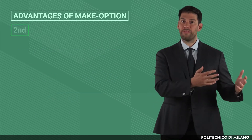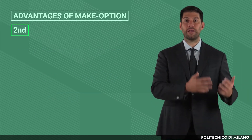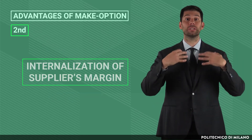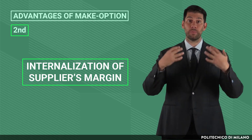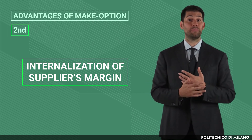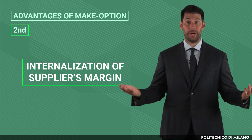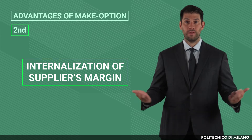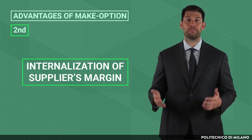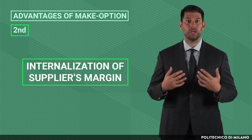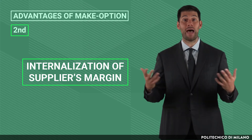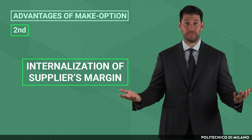A second advantage is that I will internalize the supplier's margin, as I will have to pay no margin to third parties. The only costs borne in this make option are internal costs for performing and managing activities.